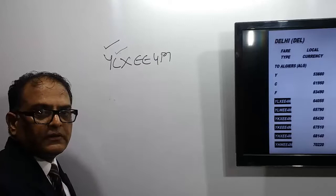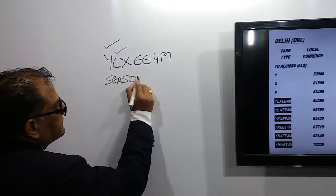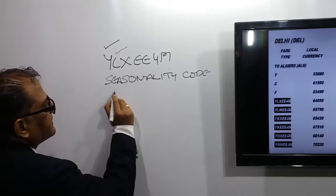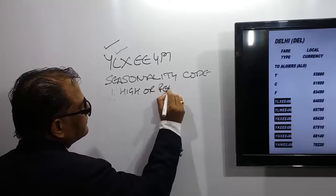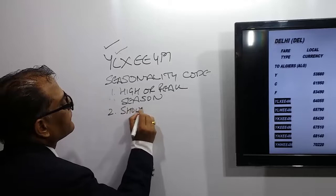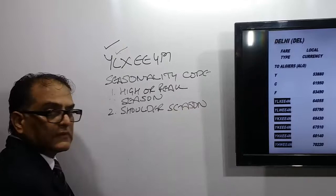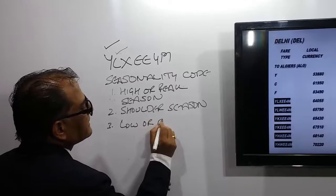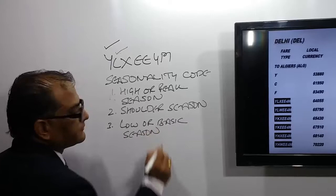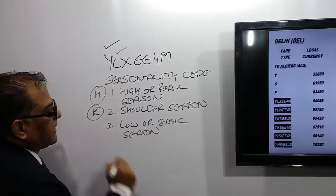Next we'll talk about the seasonality code. In travel trade we have three seasons: the first is high or peak season, the second is shoulder season, and the third is low or basic season. For high or peak season we use the code H, for shoulder season we use the code K, and for low or basic season we use the code L.